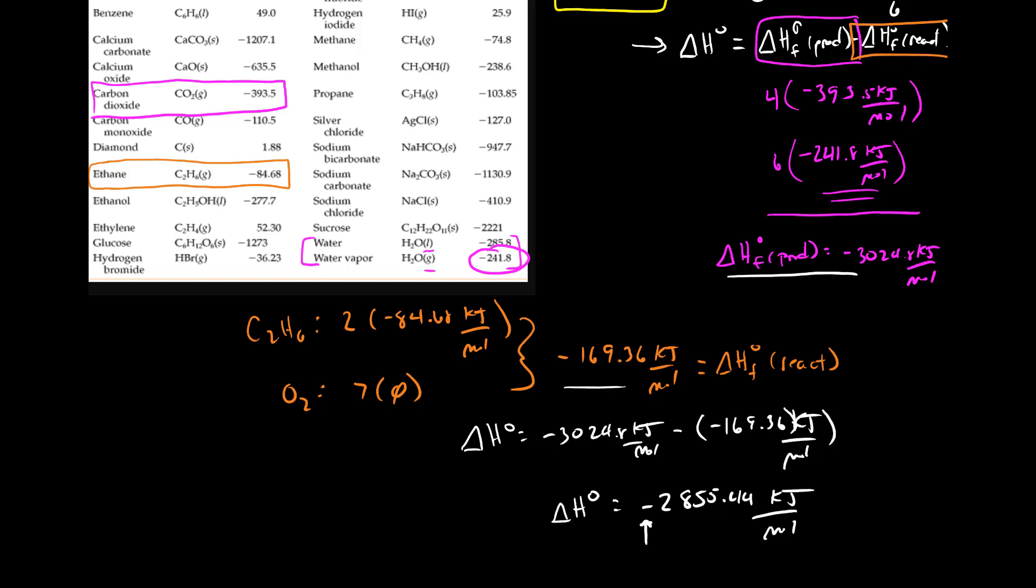The really great thing about this approach is that we have these tables of data for the formation enthalpy which is delta H not F. We also have these tables of data for delta G of formation. So the Gibbs free energy of formation.